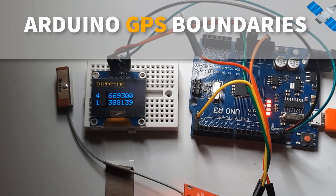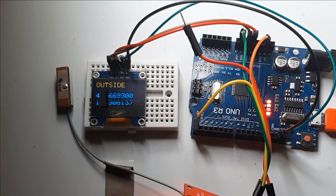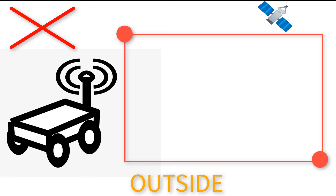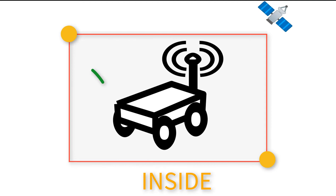In this tutorial we will learn how to make GPS boundaries. This is very useful when you have a robot that you only want to drive in a certain area. When the robot is outside the area the display will show 'Outside', and 'Inside' when the robot is inside the area. For this project you will need a GPS Neo 6M module, OLED display, jumper wires, Arduino, and Viswino software.